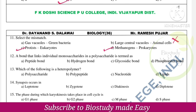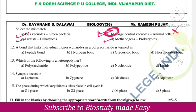Protists are eukaryotes — correct. Gas vacuoles are found in green bacteria. So the right option is option B — that is the mismatch answer.